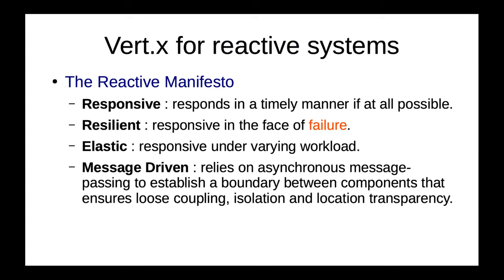When it comes to reactive systems, there is a website called the Reactive Manifesto that describes what reactive systems are. Any toolkit, framework, or library implementing a reactive system must have four main characteristics: responsive — responds in a timely manner; resilient — responsive in the face of failure; elastic — responsive under varying workloads; and message-driven — relying on asynchronous message passing to ensure loose coupling, isolation, and location transparency. Vert.x already has all four of these features.